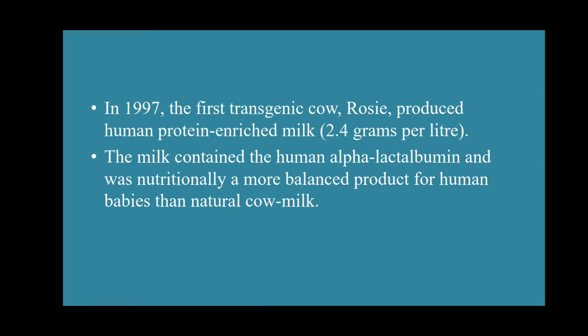In 1997, the first transgenic cow, Rosie, produced human protein-enriched milk. The milk contained human alpha-lactalbumin and was nutritionally a more balanced product for human babies than natural cow milk. This is one example of the use of a transgenic animal to obtain a beneficial biological product.